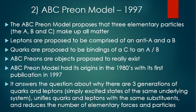The ABC prion model proposes that three elementary particles — the A, B, and C — make up all of matter. Leptons are proposed to be comprised of an anti-A and a B prion, while quarks are proposed to be the bindings of a C prion to either an A prion or a B prion. ABC prions are objects that are proposed to really exist, unlike quarks, where their existence is a bit more nebulous. The ABC prion model had its origins in the 1980s, with its first publication in 1997. It answers the question about why there are three generations of quarks and leptons, unifies quarks and leptons with the same substituent particles — the prions — and reduces the number of elementary forces and particles believed to exist in nature.